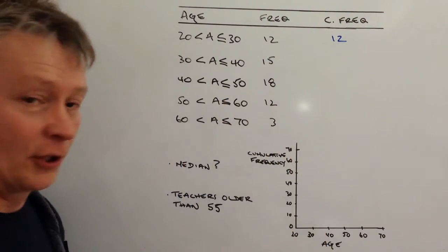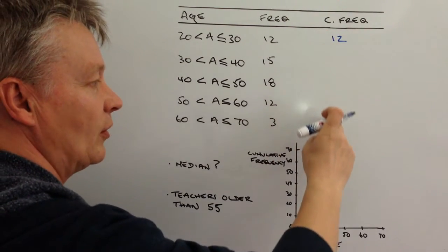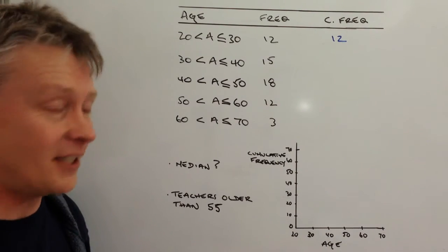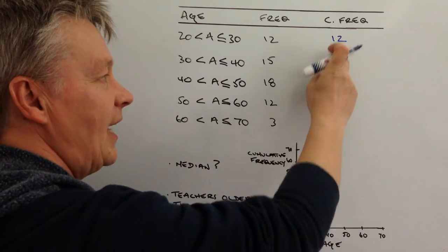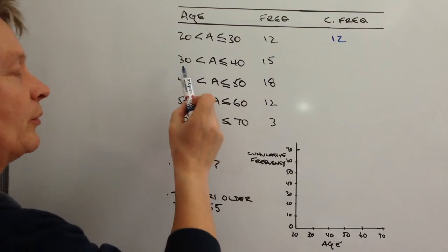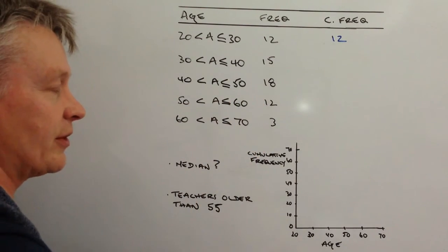And what we're going to do now is calculate all of this accumulation. We're told in the question that there are 60 teachers in total, so the end total should come to 60. In the second group we've got teachers who are older than 30 and less than or equal to 40, and that's 15 teachers in total.